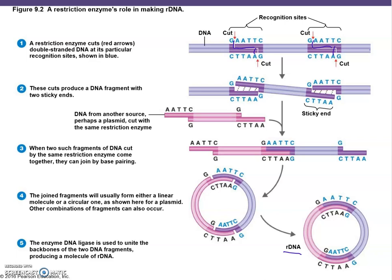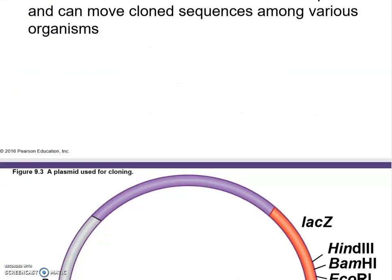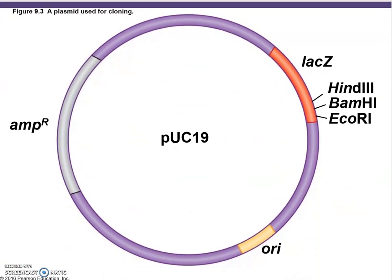Vectors are vehicles that carry new DNA to desired cells and must be able to self-replicate. The easiest vector to work with is the plasmid, though viruses can also be used in recombinant DNA technology. Shuttle vectors exist in several different species and can move cloned sequences among various organisms. Plasmids originally come from bacteria and can be modified easily. A classic example is pUC19 — one of the oldest and simplest plasmid vectors, a simple circle of DNA.